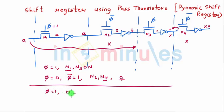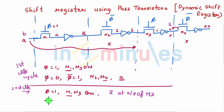Now again phi will become 1, again N1 and N3 will turn on. N1 will take a new input which is say B. N3 will absorb A and produce A bar here, so A bar at the output of N3. This is the second clock cycle, mind you.